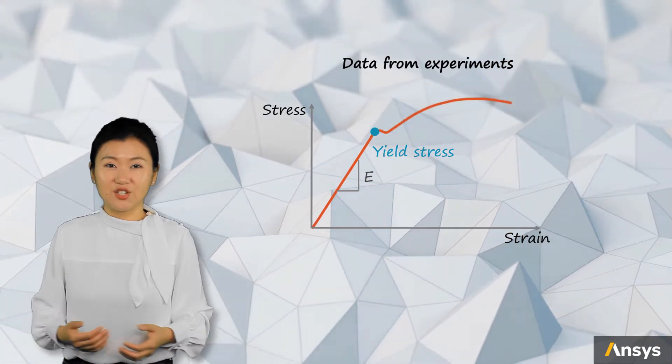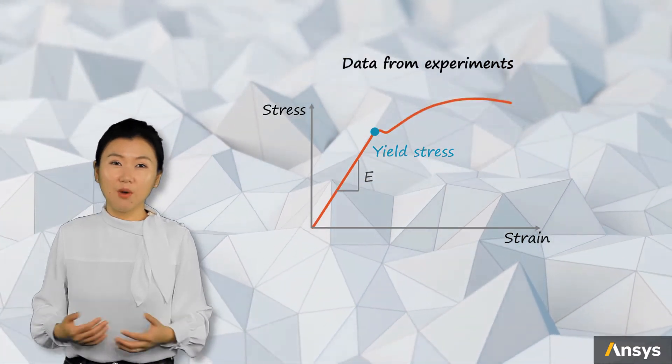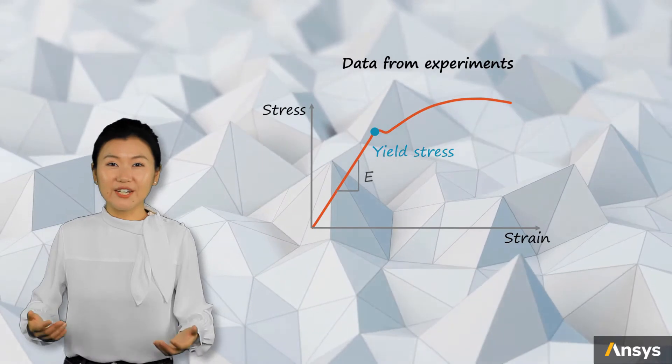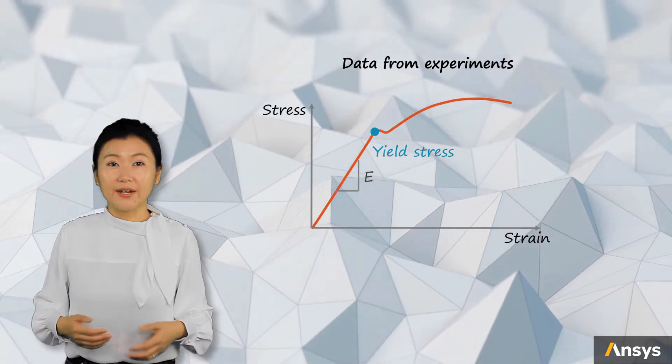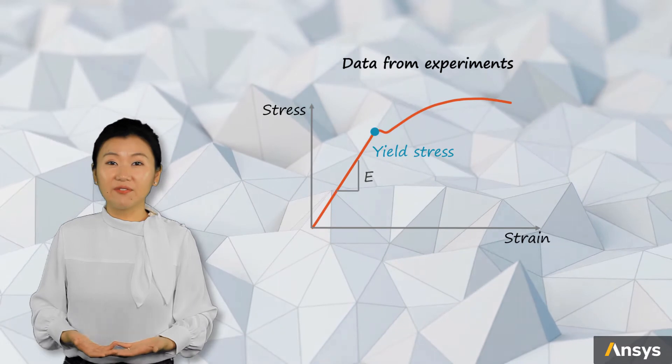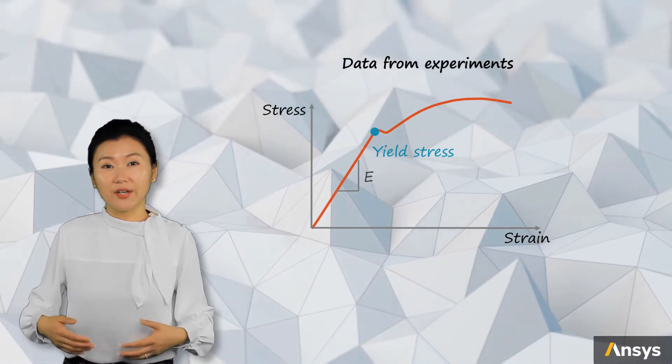If hardening is considered, we need to define the hardening model. The given data curve of a material is usually complex and irregular. We need to simplify and smooth the data to define a hardening model.